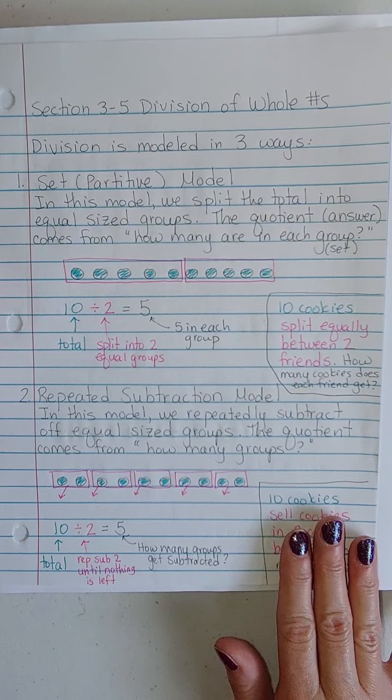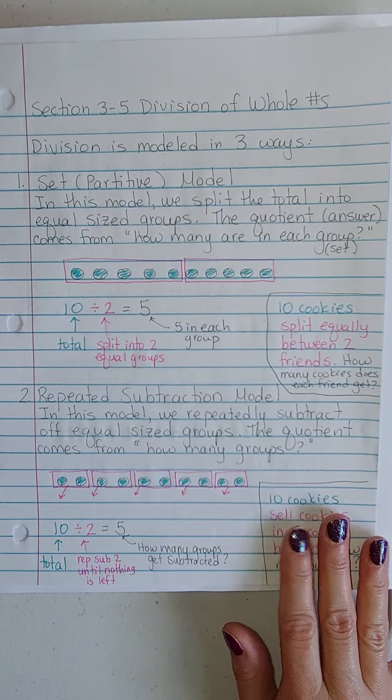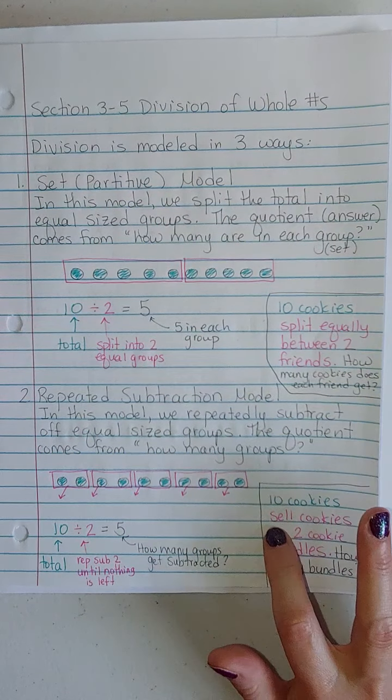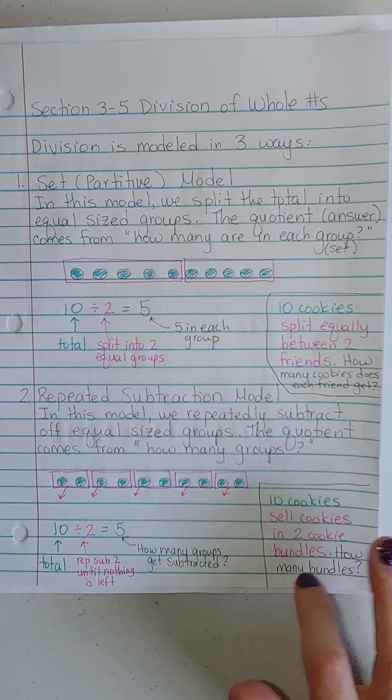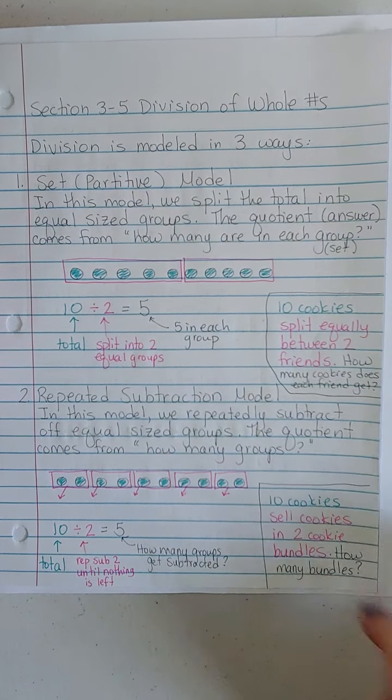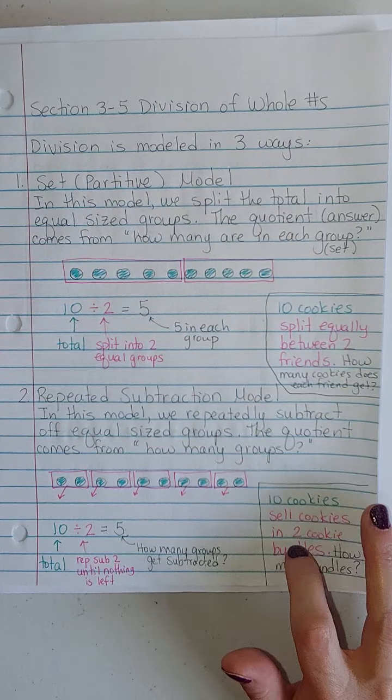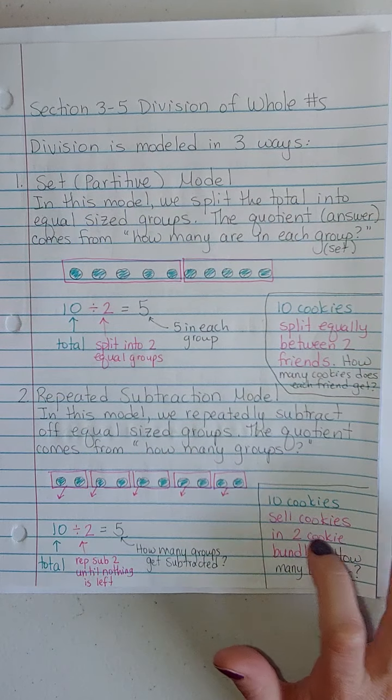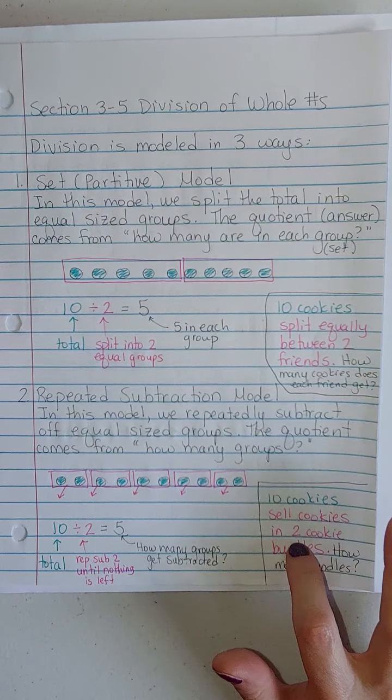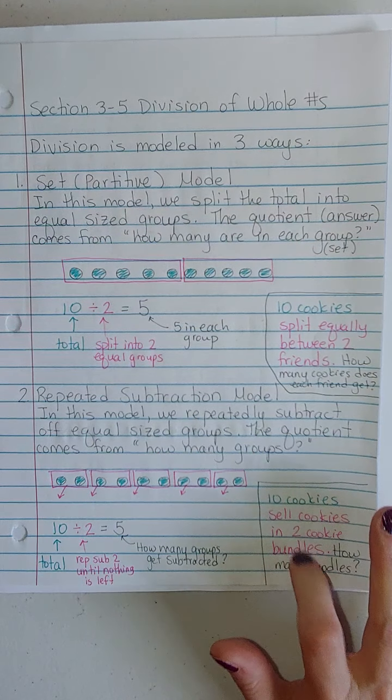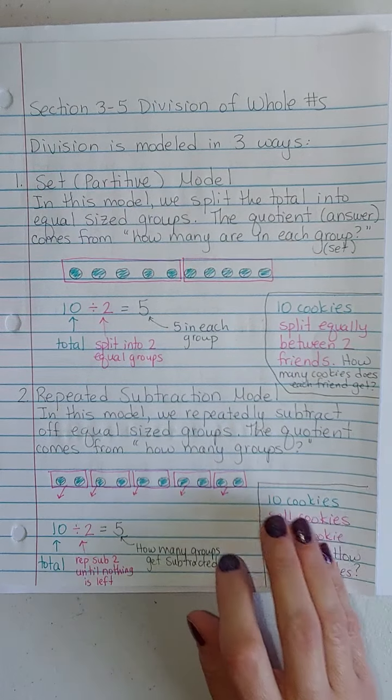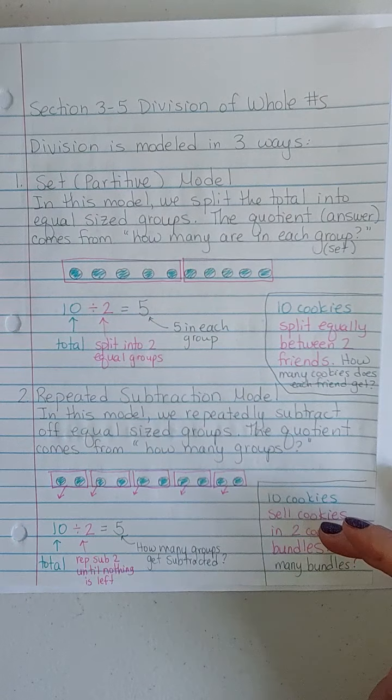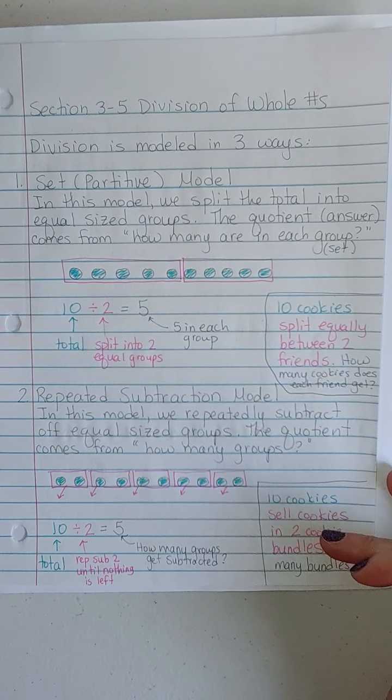What scenario would that go with? That would be like having 10 cookies, and let's say that you're going to sell the cookies in 2 cookie bundles. How many bundles can you make? That's not dividing the 10 into 2 groups. That's dividing the 10 into groups of size 2. It's going to be really important that we be able to identify, when we look at a specific problem, which type it's leaning toward.